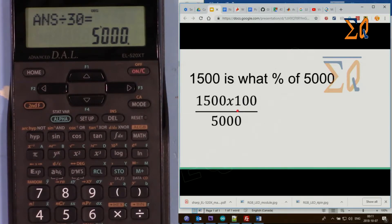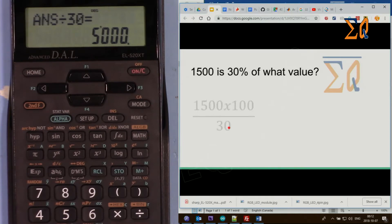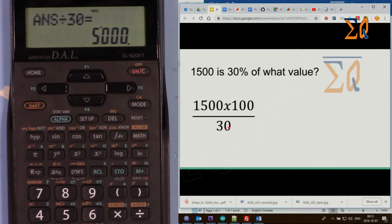1,500 times 100 is at the top, and then the bottom just changes from 5,000 to 30.